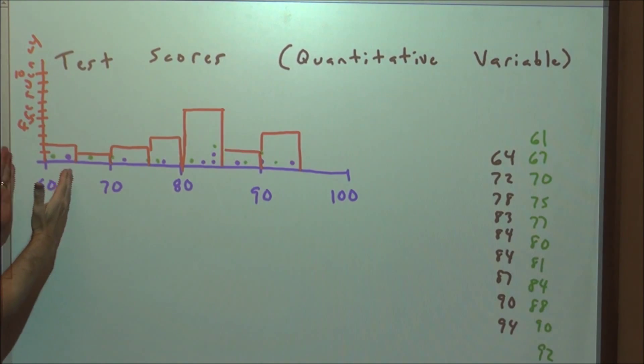for every dot, for every score in a certain interval, let's create a bar that's as high as that frequency is. So we have two scores between 60 and 64, so we make a bar in the frequency distribution going up to two. We only add one score in here, two scores here, three scores here, etc.